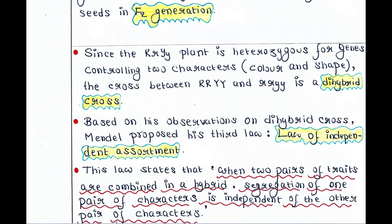The capital R small r capital Y small y plant found in the F1 generation is heterozygous for genes controlling two characters — one character is color and one is shape. Hence the cross between capital R capital R capital Y capital Y and small r small r small y small y is a dihybrid cross, because 'di' means two, and this is a hybridization cross. Since two genes are involved — one maintaining color and the other maintaining shape — it is called a dihybrid cross.